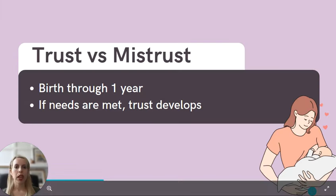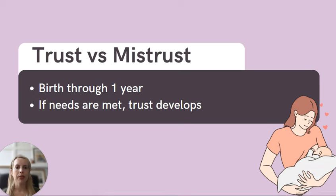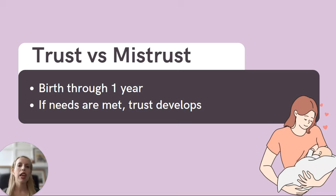First up, we have trust versus mistrust. Think babies for this one — from birth to around one year of age. If an infant receives loving and attentive care from their caregivers, trust is born. If their basic needs are not met — think feeding, love, diapering — then mistrust and insecurity will develop.